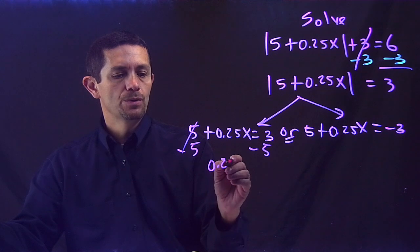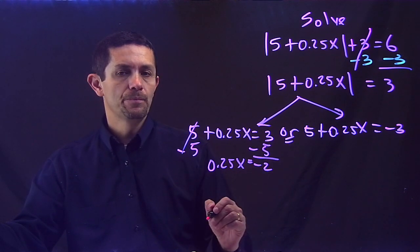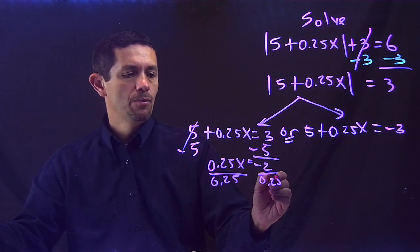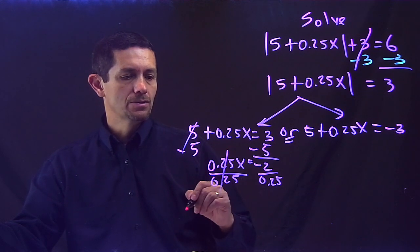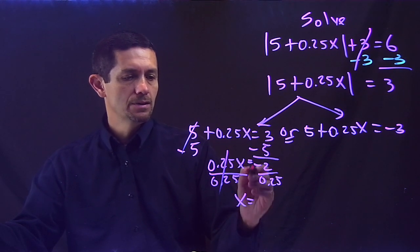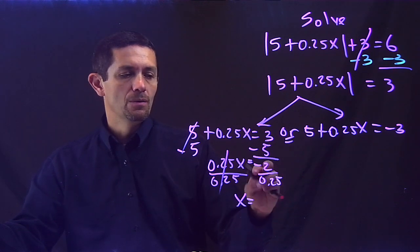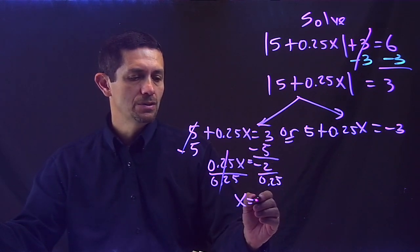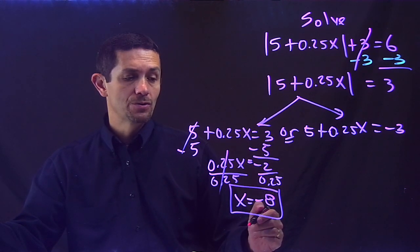0.25x equals negative 2, divided by 0.25, 0.25, and that's going to cancel out. So I have x equals, now negative 2 divided by 0.25, that 0.25 is the same as 1 quarter. 1 quarter reciprocal is 4, so it's negative 2 times 4, which is negative 8. So that's my first answer.